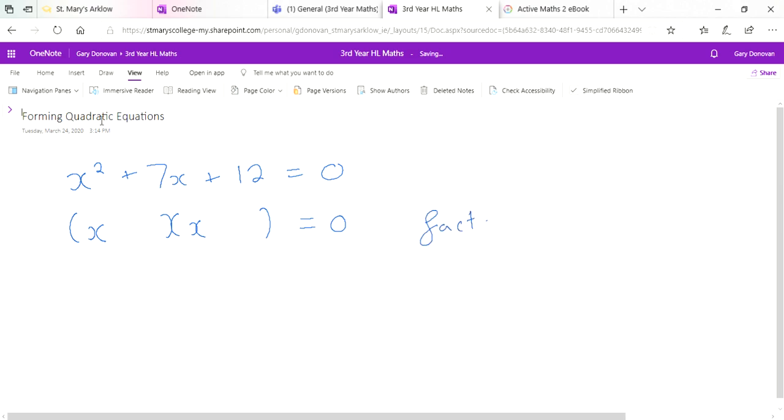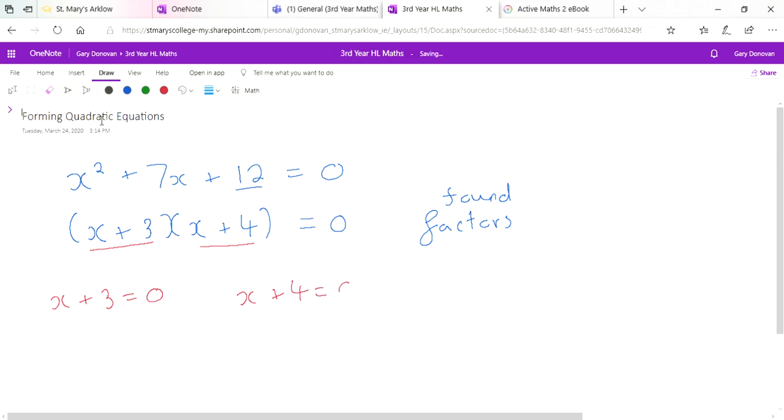Now to solve it, first of all you factorize it or you found the factors. And in this case the factors would be, well the factors of 12 are 4 and 3, and 4 and 3 add up to give us 7. So the factors would be x plus 3 and x plus 4. There are two factors. You then solve it and you get x plus 3 must equal 0 and x plus 4 must equal 0. So therefore x equals minus 3 and x equals minus 4.